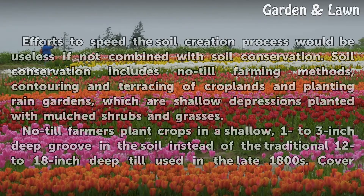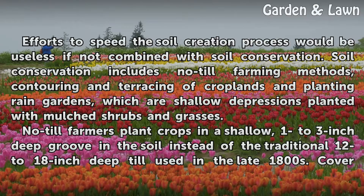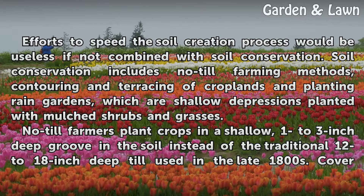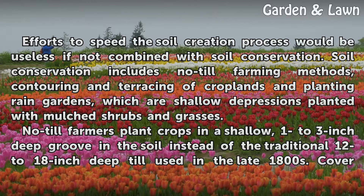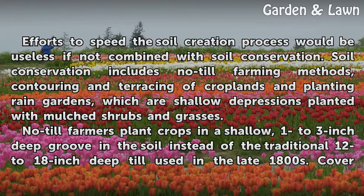Efforts to speed the soil creation process would be useless if not combined with soil conservation. Soil conservation includes no-till farming methods, contouring and terracing of croplands, and planting rain gardens, which are shallow depressions planted with mulched shrubs and grasses.